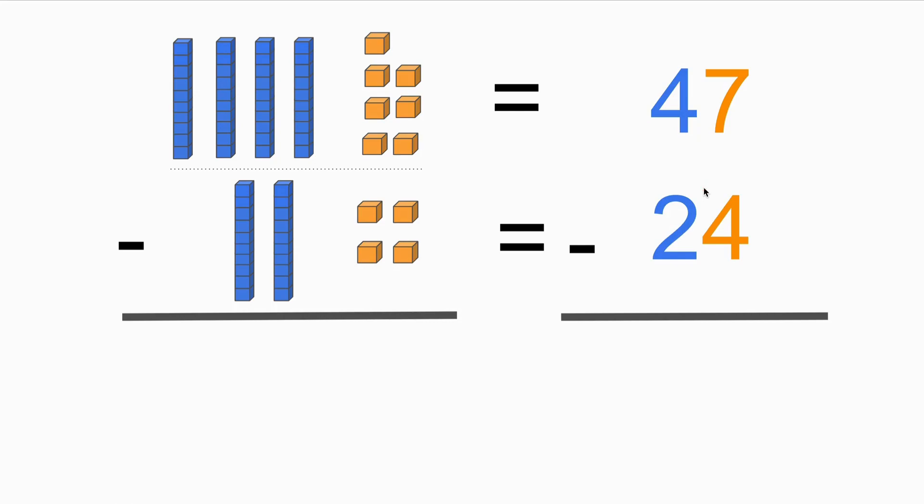So now let's see how we can get the result of 47 minus 24. Let's first take a look at the blocks.